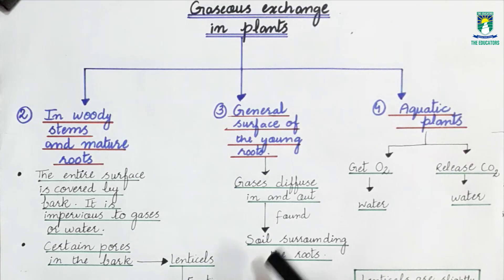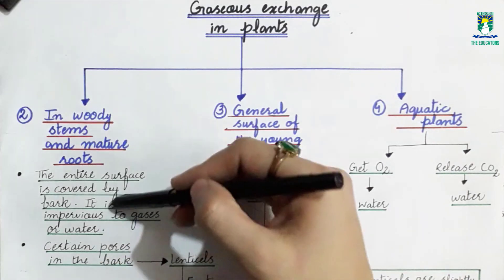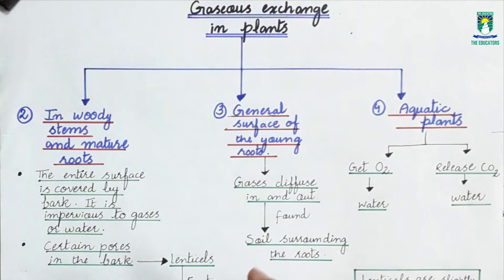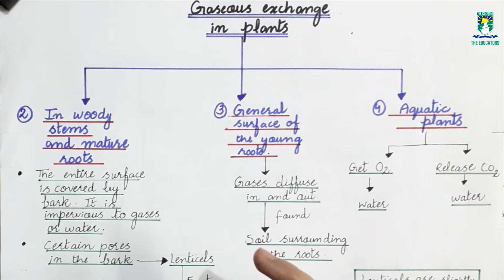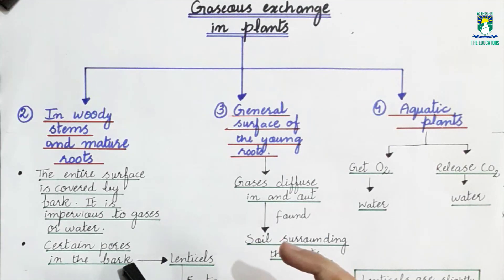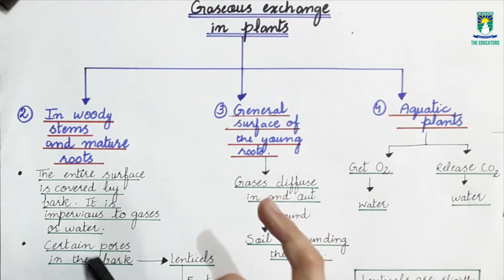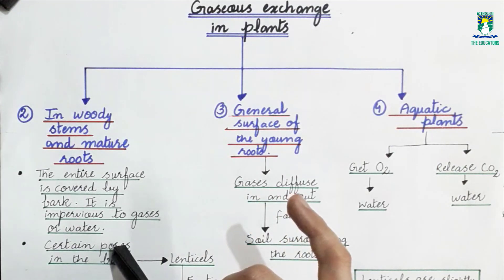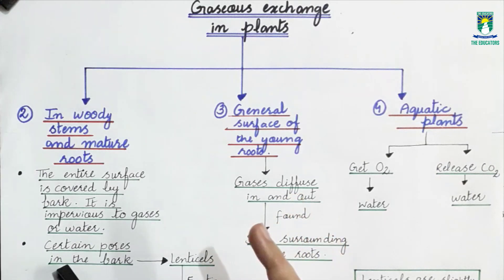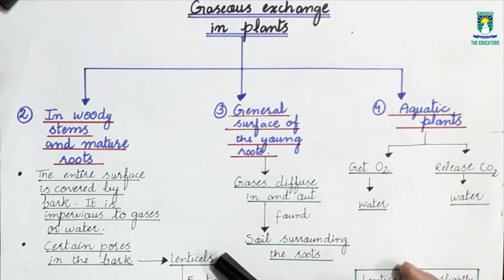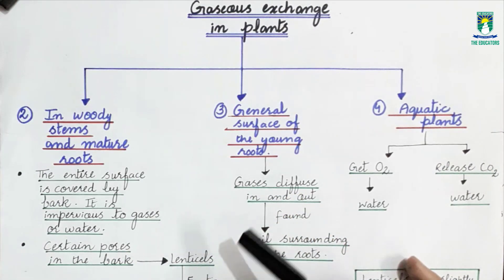So woody stems and mature roots have certain pores present in the bark. The outer layer of woody stems and mature roots has these pores, and we call them lenticels. They help in the exchange of gases.